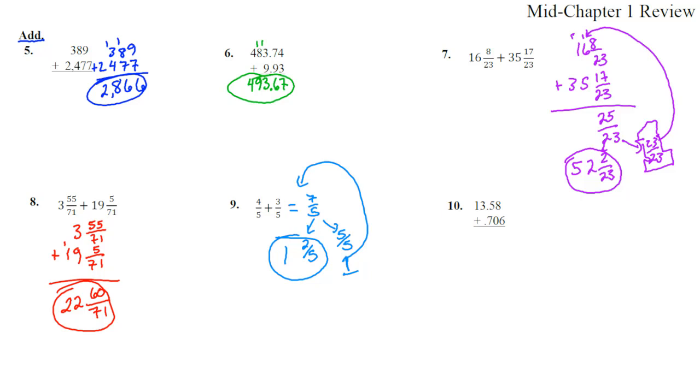Number 10, we have 13.58 and 0.706. I'm going to write it out so it looks exactly lined up, 13.58 plus 0.706. Kind of looks the exact same, but these looked a little bit skiwampus. So 0 plus 6 is 6, 8 plus 0 is 8, 5 plus 7 is 12, that's 2, carry the 1, 1 plus 3 is 4, and 1. 14.286.